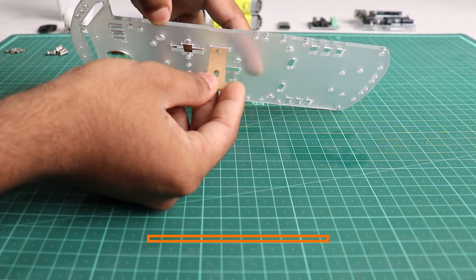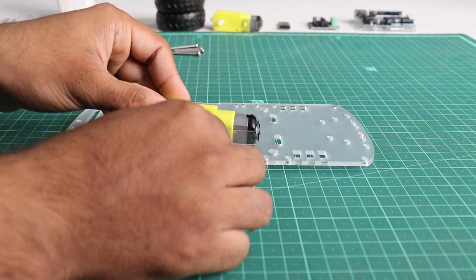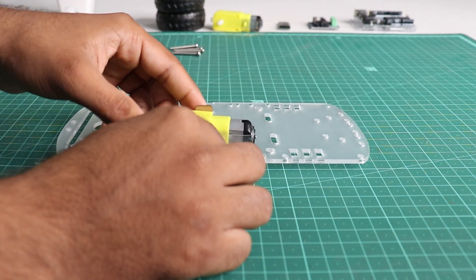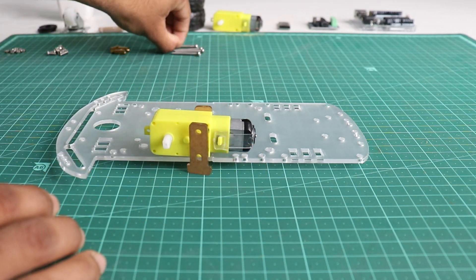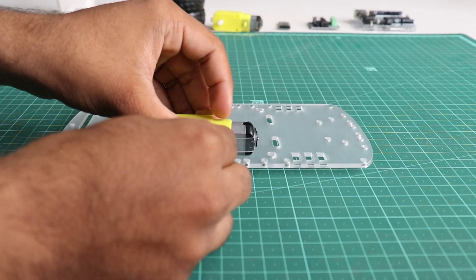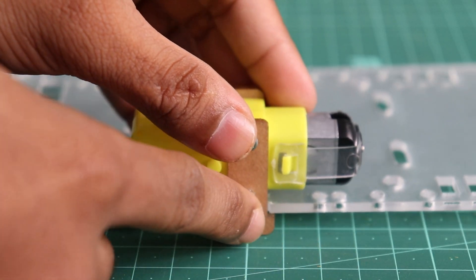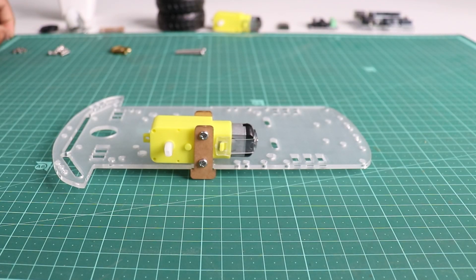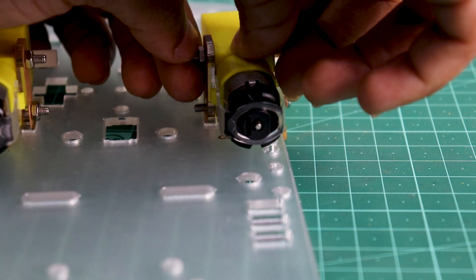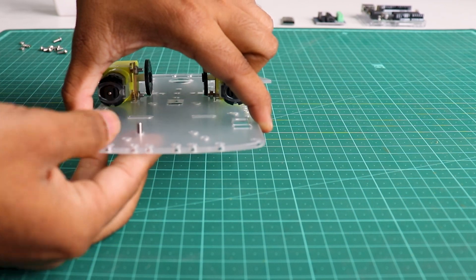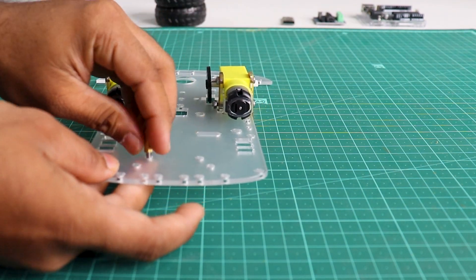Okay guys, now let's start with the assembly. First, connect the motors to the chassis using extensions and screws. Tighten them properly. Similarly, attach the other motors to the chassis with the screws and extensions.